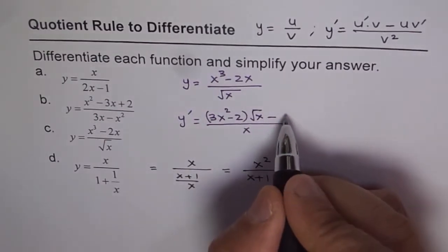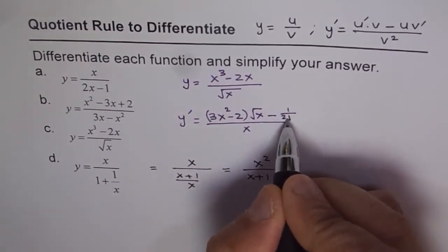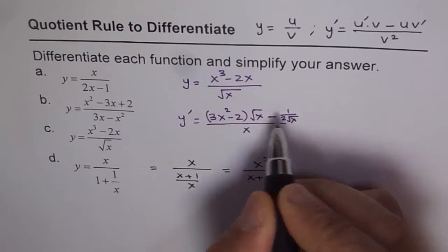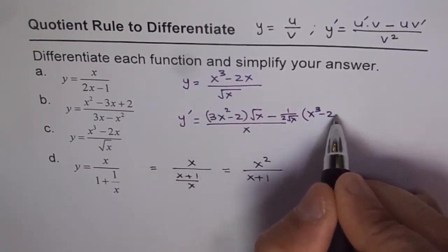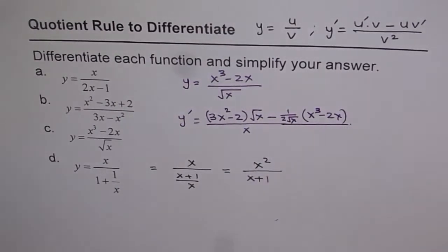Now square root x derivative is 1 over 2 square root x. Multiply that by x cubed minus 2x. So that becomes your numerator.